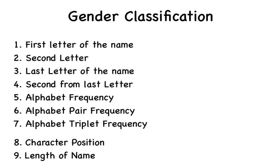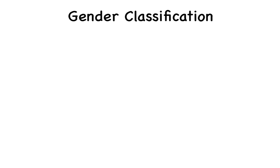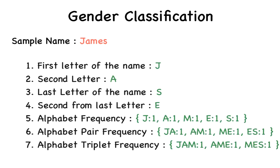Feel free to brainstorm all sorts of possibilities. But let's work with these for now. Let's perform feature extraction on a sample name, because we just want to know what's what. Consider the name James. What are their features? So the first letter is J, the second letter is A, the last letter is S, the second from last letter is E, the frequency distribution of the alphabets is 1J, 1A, 1M, 1E, 1S.